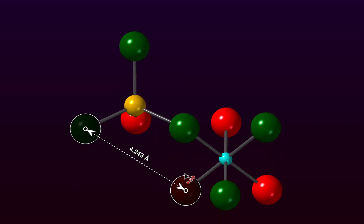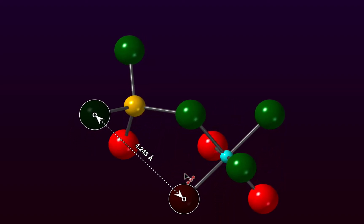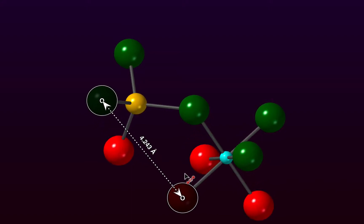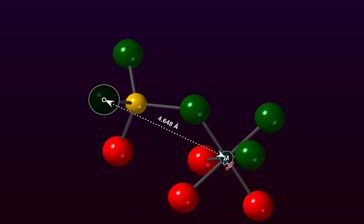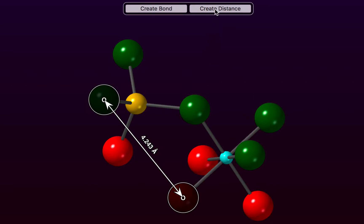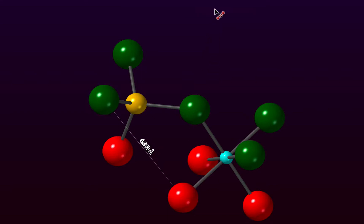We can actually rotate our model and preserve that measurement whilst we are rotating. If you want to make that measurement permanent, then we click again to anchor the measurement, and we can click on Create Distance, and that creates a bond distance measurement in the structure.